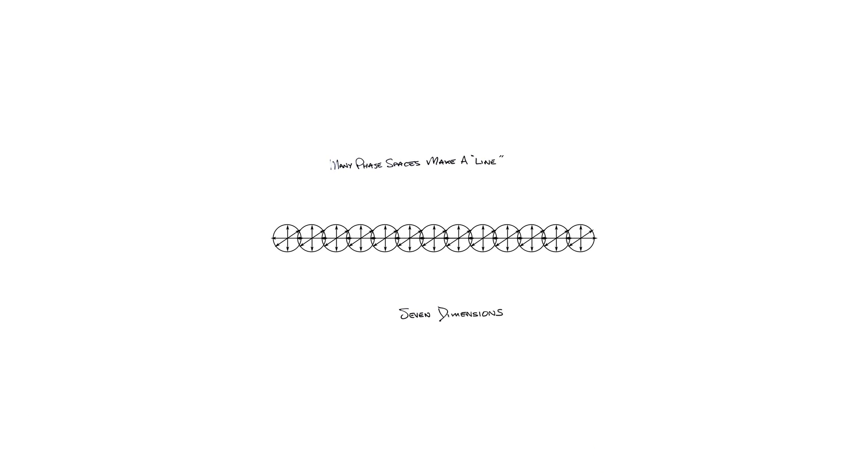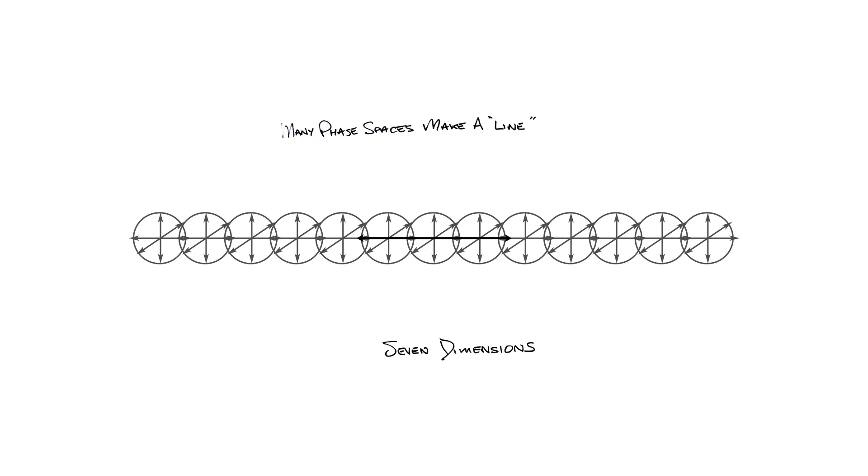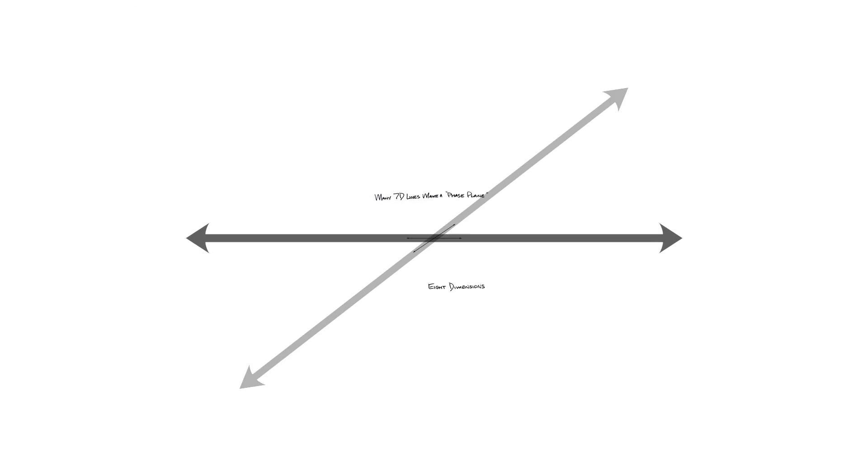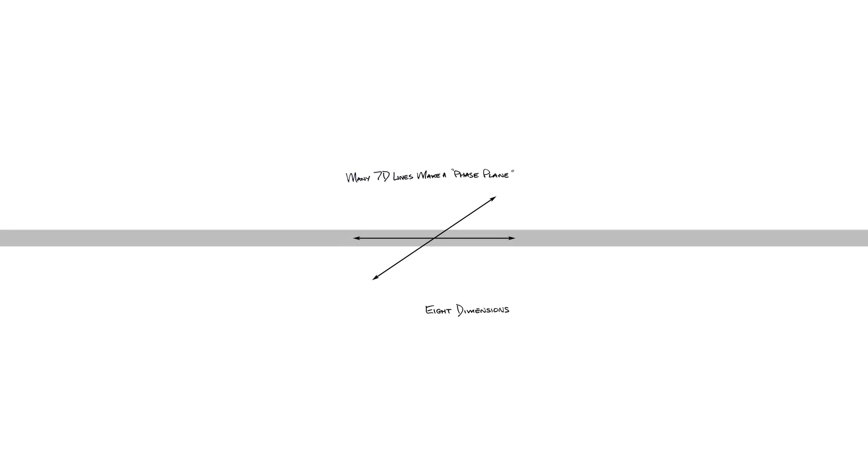Many different phase spaces representing different unique universes make a line in seven dimensions. Do any one of these 7D lines pass through every possible 6D universe? No.